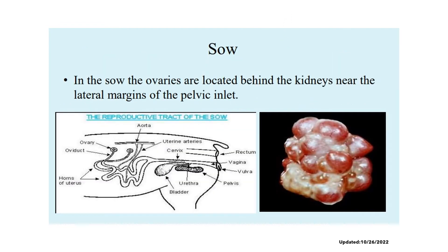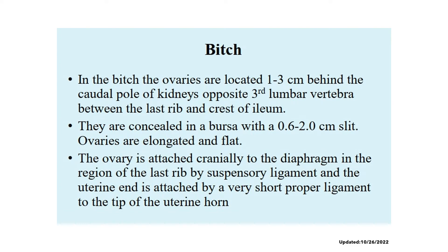In the sow, the ovaries are located behind the kidneys near the lateral margins of the pelvic inlet, resembling a mulberry shape or cluster of grapes. In the bitch, the ovaries are located 1 to 3 cm behind the caudal pole of the kidneys, opposite the third lumbar vertebra. The ovaries are concealed in the ovarian bursa and are elongated and flat.